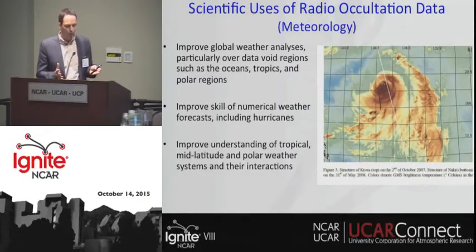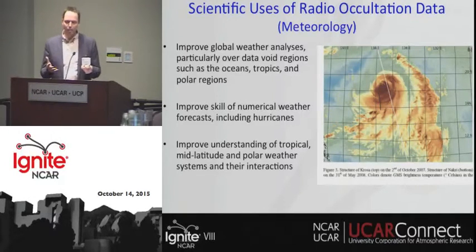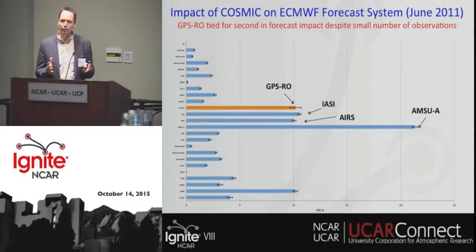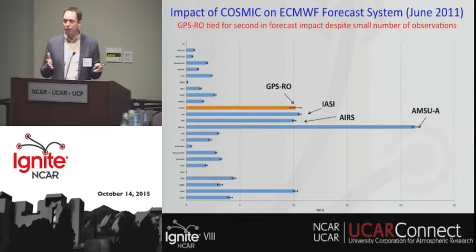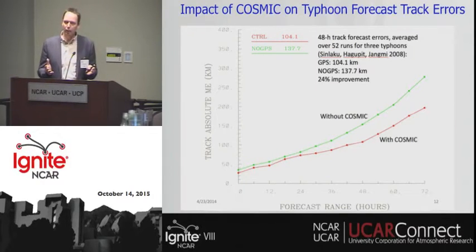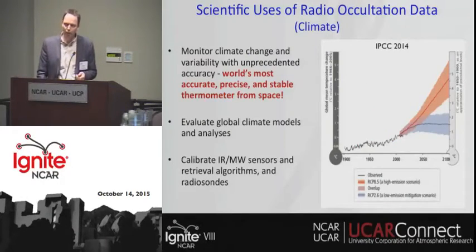For weather applications, what we really want to do is improve our skill in numerical weather forecasting, hurricane track and intensity forecasting, as well as improving our understanding of atmospheric processes around the globe. This is showing the impact of COSMIC on the ECMWF forecast analysis. GPS RO is tied for second place in terms of forecast impact, despite a small number of observations. Regarding typhoon track error, when we assimilate COSMIC data, the track error is reduced — by 24% in this example.